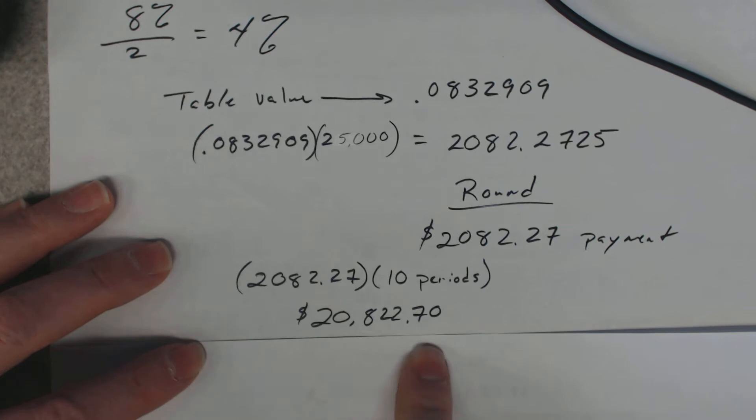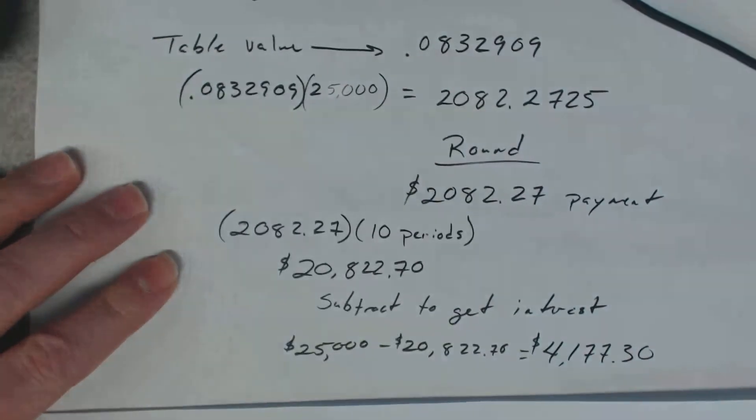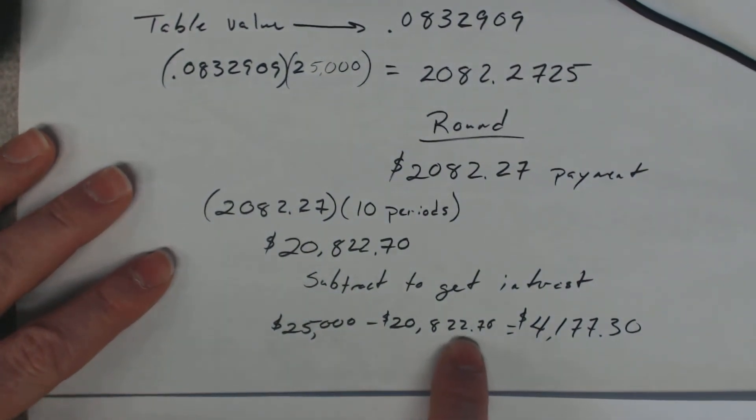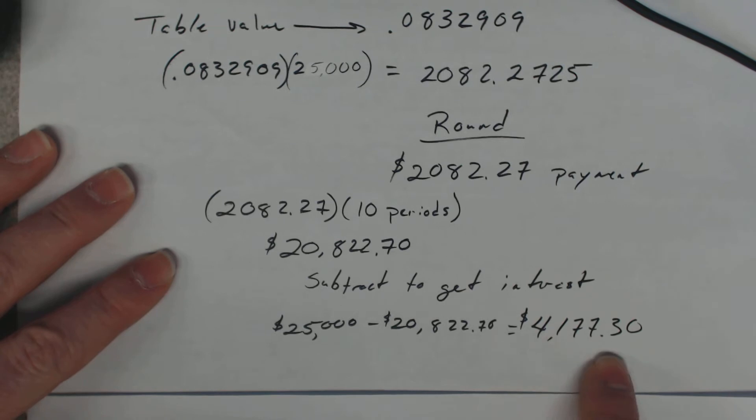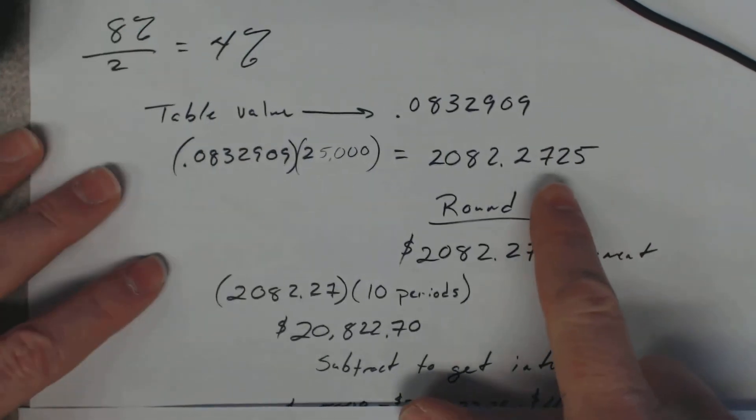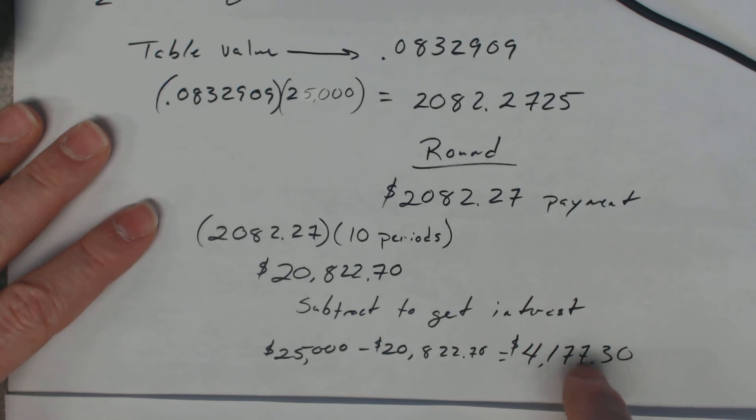So if you want to figure out how much interest he made, we'll just take and subtract that from what he has now. So he takes $25,000 minus what we figured out, $20,822.70, and we get $4,177.30 for the interest he made in this question. If you don't round correctly up here, then you'll wind up with a different answer down here.